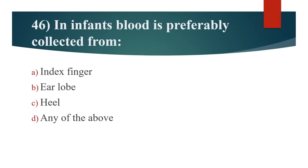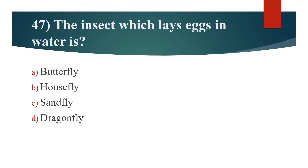46th question: In infants, blood is preferably collected from? Option A: Index finger. Option B: Earlobe. Option C: Heel. Option D: Any of the above. Answer is Option C: Heel.